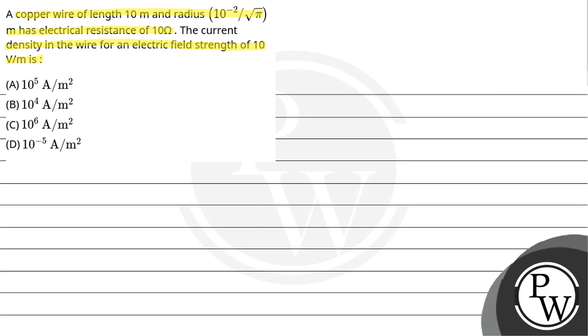Option A: 10 to the power 5 ampere per meter square. Option B: 10 raised to the power 4 ampere per meter square. Option C: 10 raised to the power 6 ampere per meter square. And option D: 10 raised to the power minus 5 ampere per meter square.